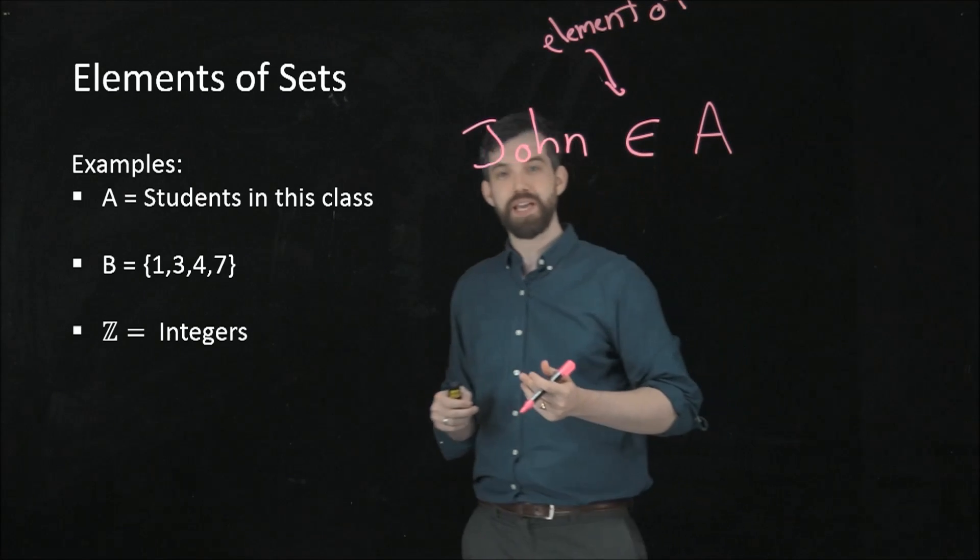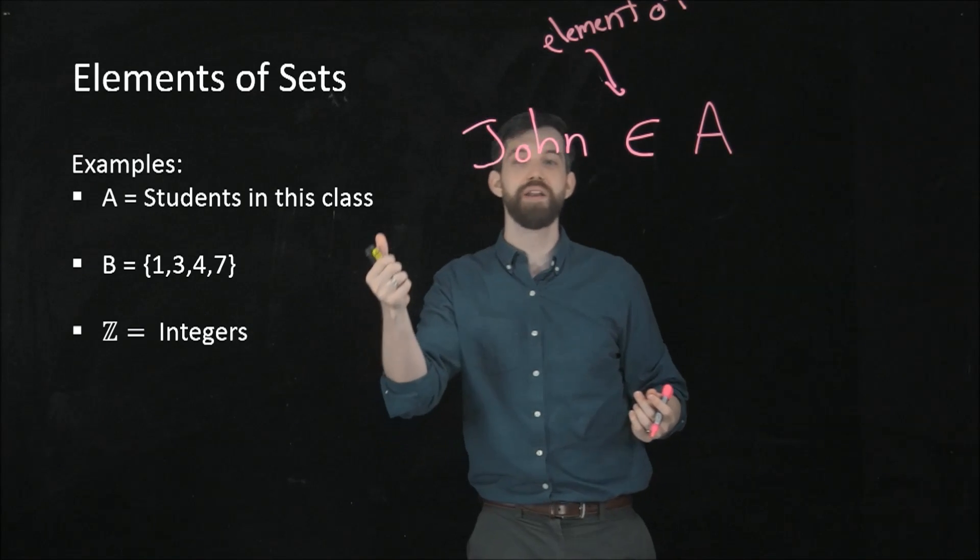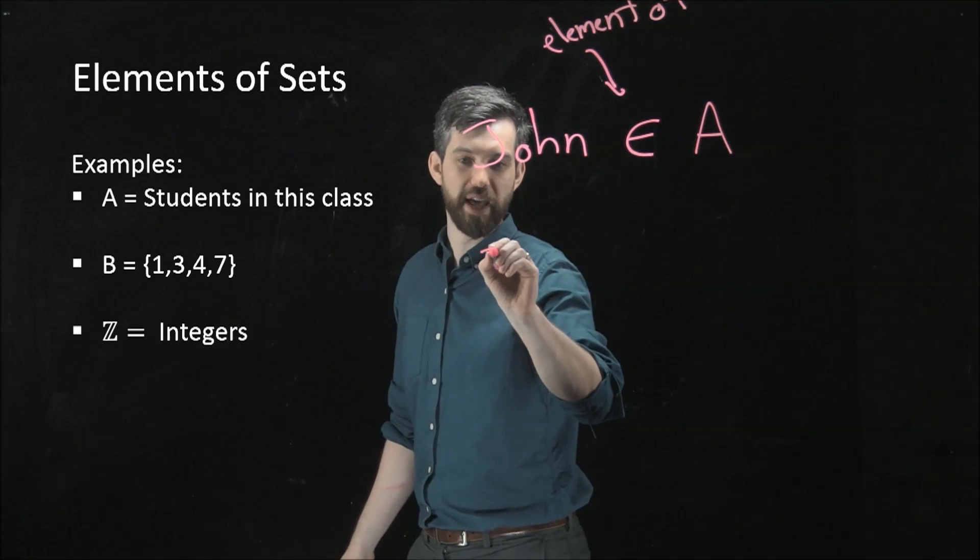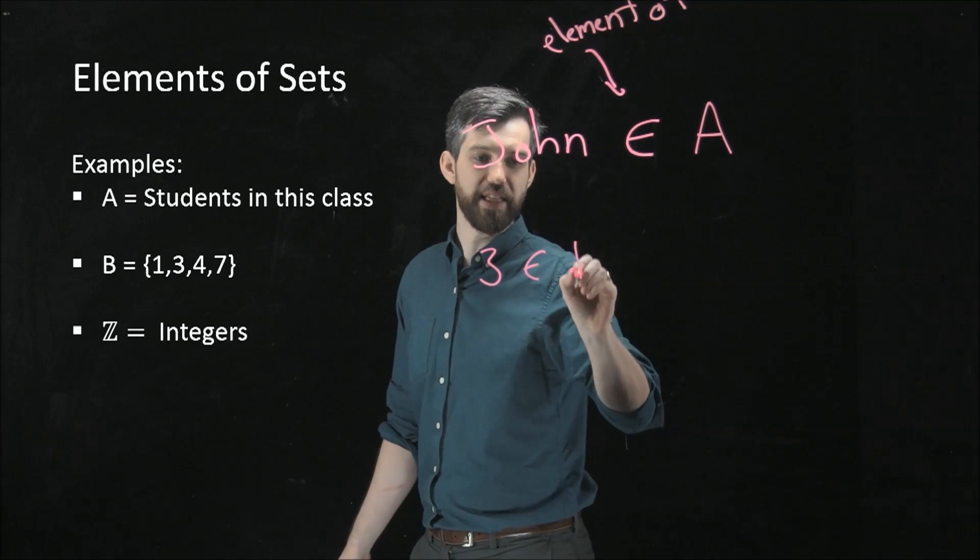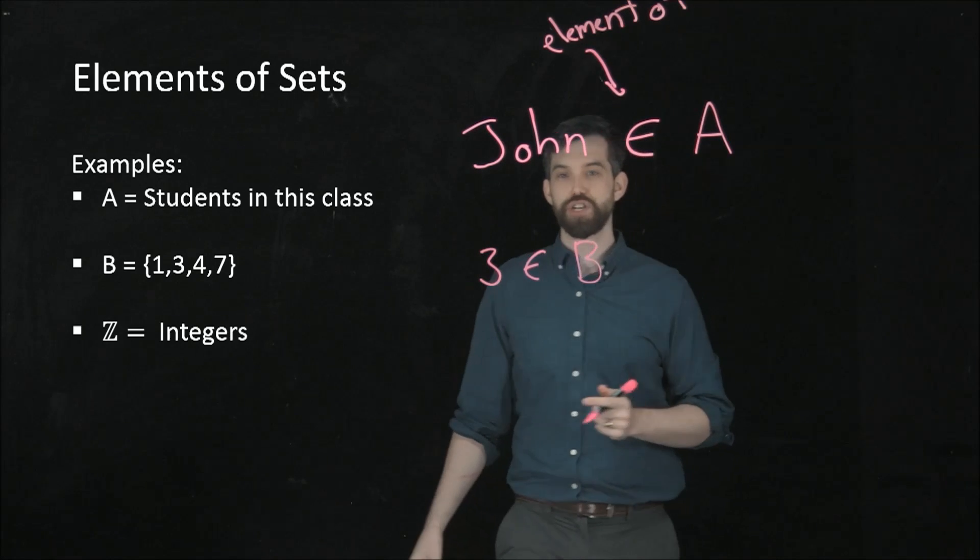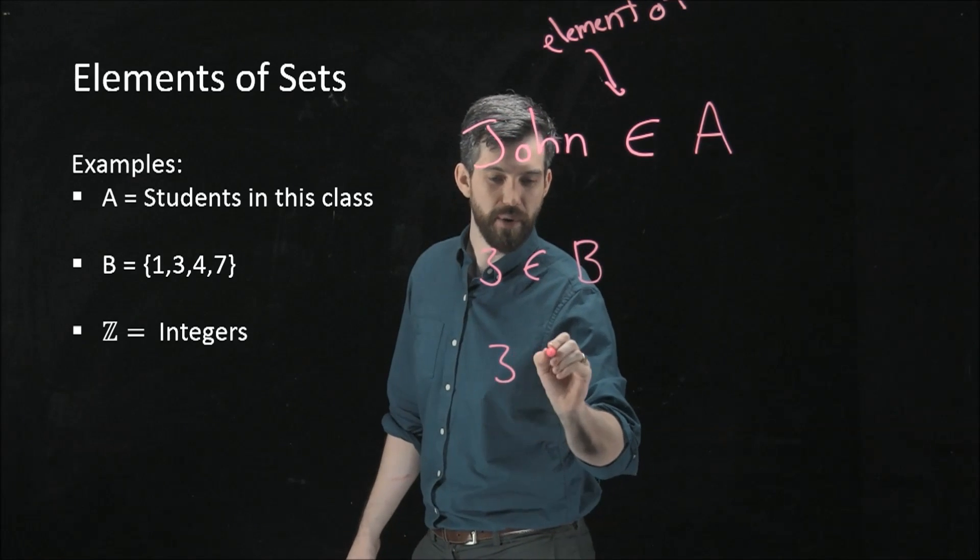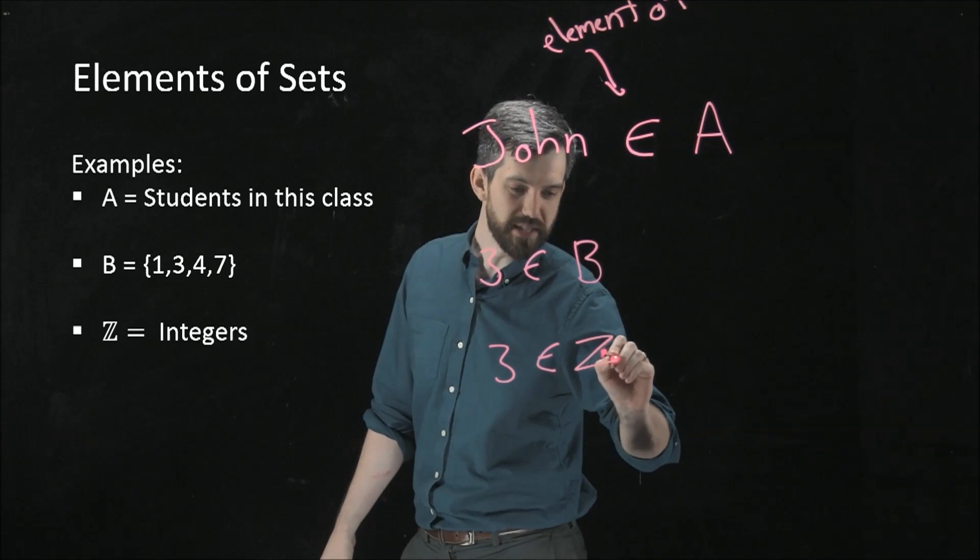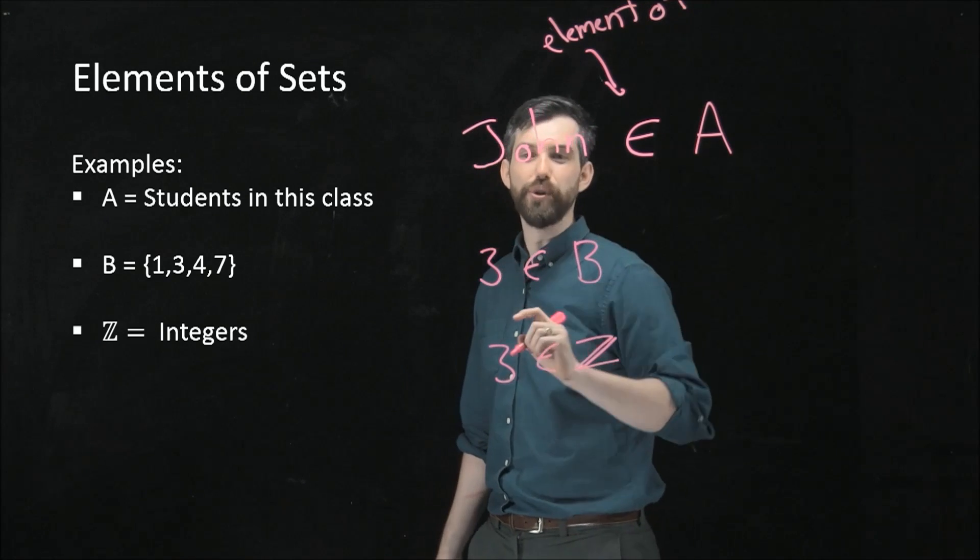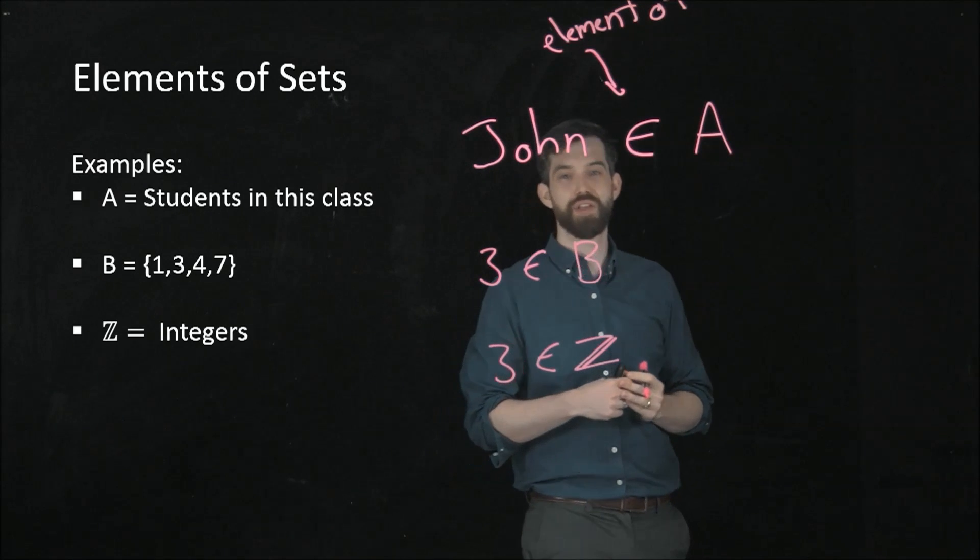Let's look at set number B. Well, there's a whole bunch of elements: 1, 3, 4, and 7. Maybe I'll just choose one of them, like 3, and I can say that that is inside of my set B. And finally, for the integers, well, 3 is also an element of the integers. Notice that the integers are written in a kind of funny way. It's a Z, but it's a Z with two lines here. That's how I denote the integers.